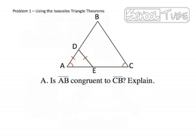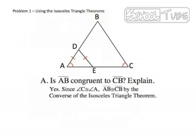Well, since angle C is congruent to angle A, then segment AB must be congruent to segment CB by the converse of the Isosceles Triangle Theorem. So the answer to question A is yes, segment AB is congruent to segment CB.